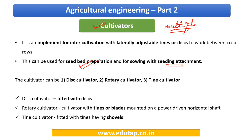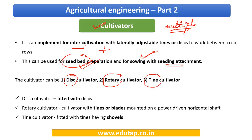When talking about interculture or after-tillage operations, we're referring to tillage done once the standing crop is available. You need to link this to earlier lectures on basics of agriculture where we deeply understood tillage and its classifications. Immediately when we discuss cultivators, retrieve that information — only then will you understand what we're discussing here. It is used for interculture operations plus seedbed preparation and sowing. There can be different types of cultivator: disc cultivator, rotary cultivator, and tine cultivators.